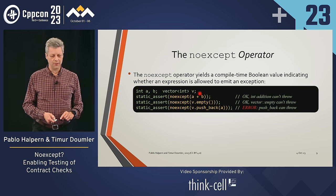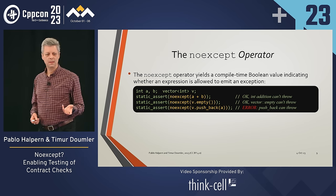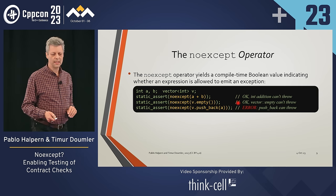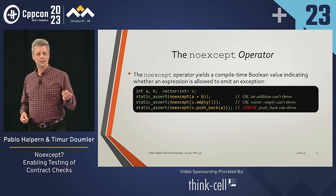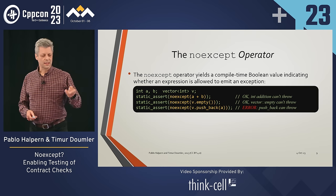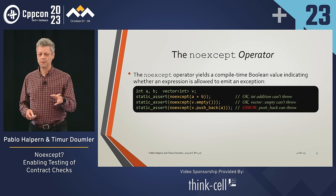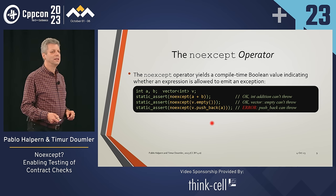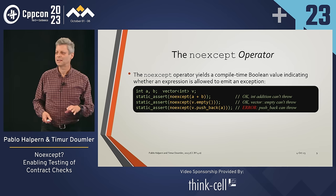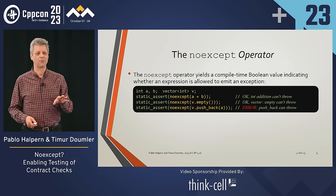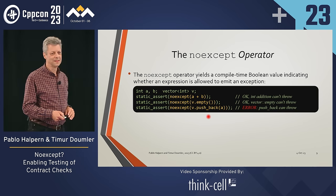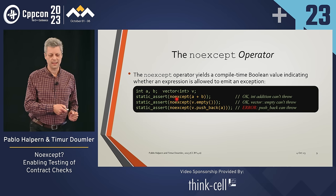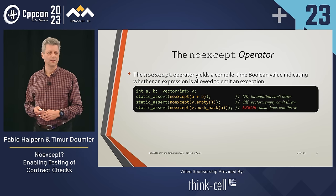Our first expression is a+b where a and b are integers — integer arithmetic does not throw, therefore noexcept returns true and the static_assert is good. Calling empty on a vector: the empty function is declared noexcept in the standard, so noexcept(v.empty()) is true. push_back, however, is not declared noexcept — so noexcept of push_back will say false and the static_assert will fail at compile time.